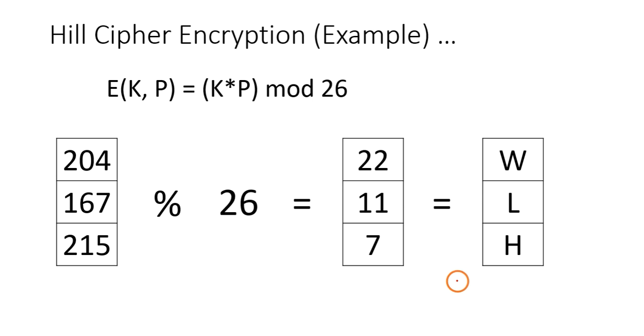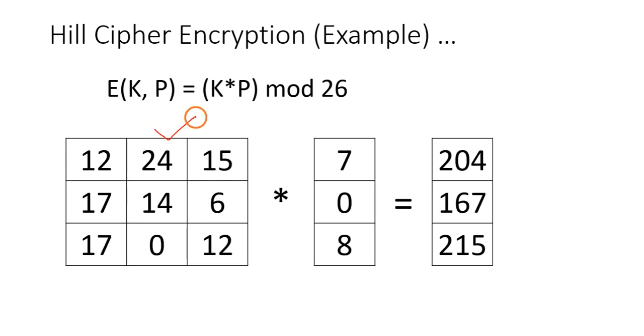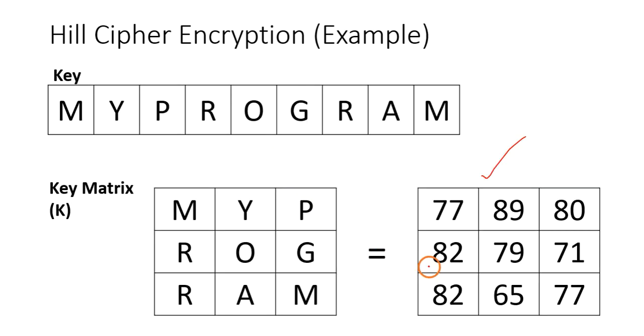I forgot to explain one point. This is our key matrix, right? From this key matrix, how did we get this one? We are doing mod 65. We performed the mod 65 on each value in the key matrix.